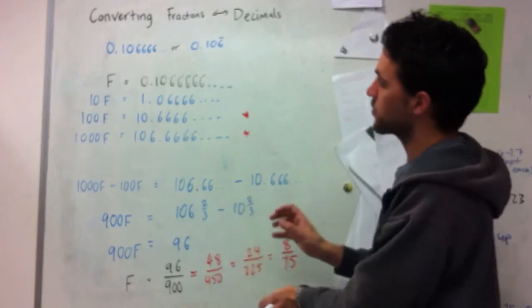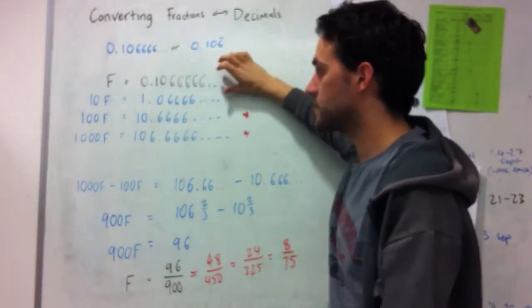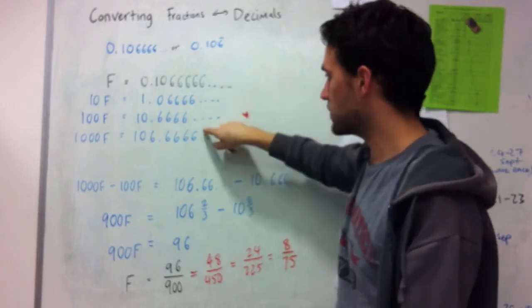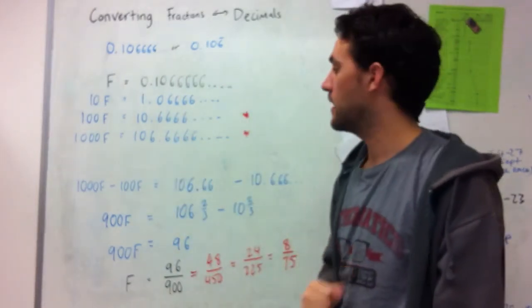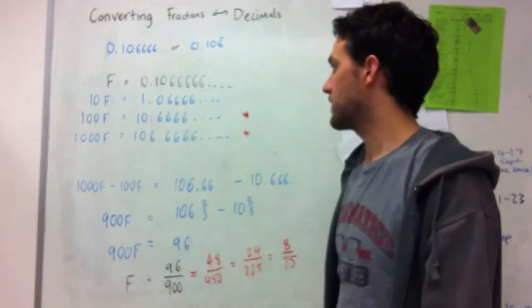So the important part of this process is just continuing to multiply our fraction by 10 until we get two numbers that have exactly the same decimal component. And then we can do the subtraction. And everything else sort of follows from that.